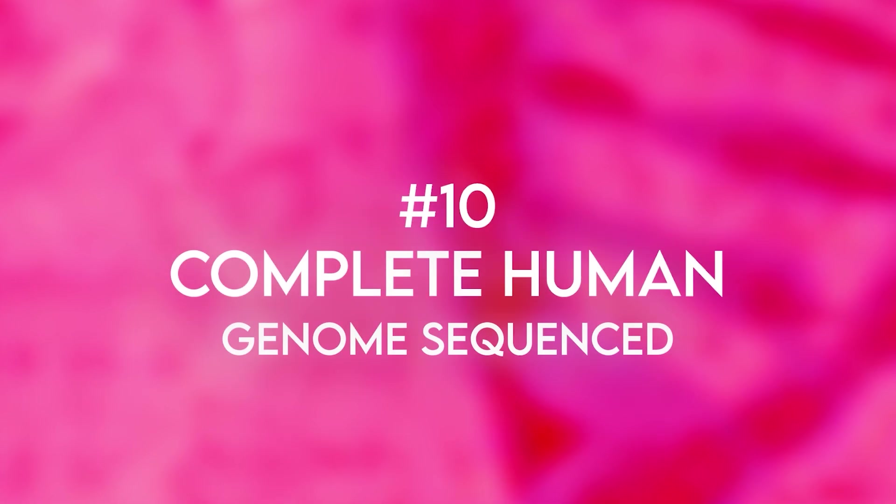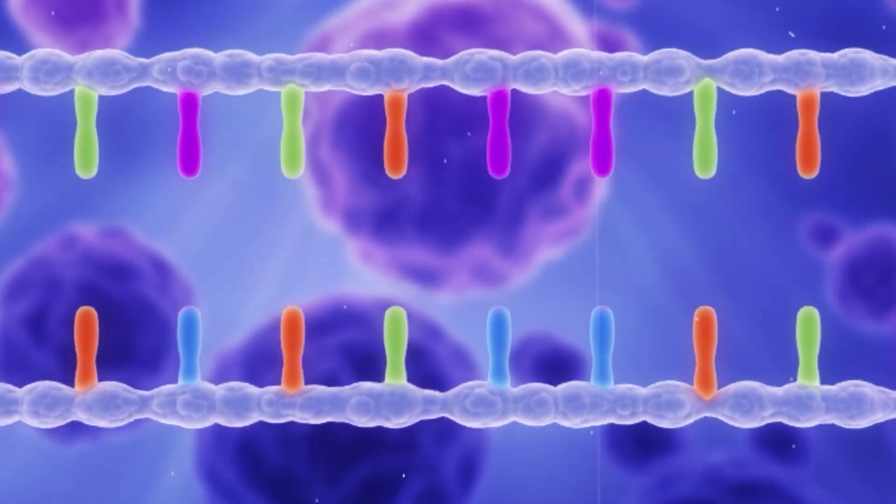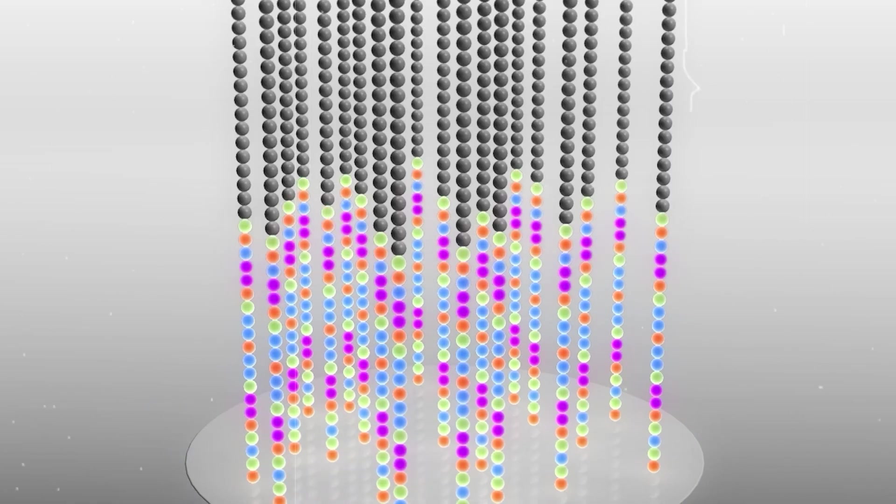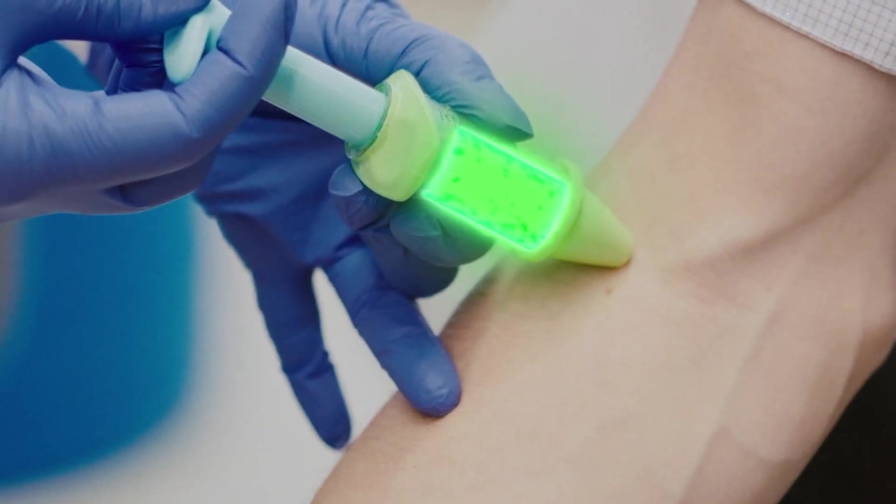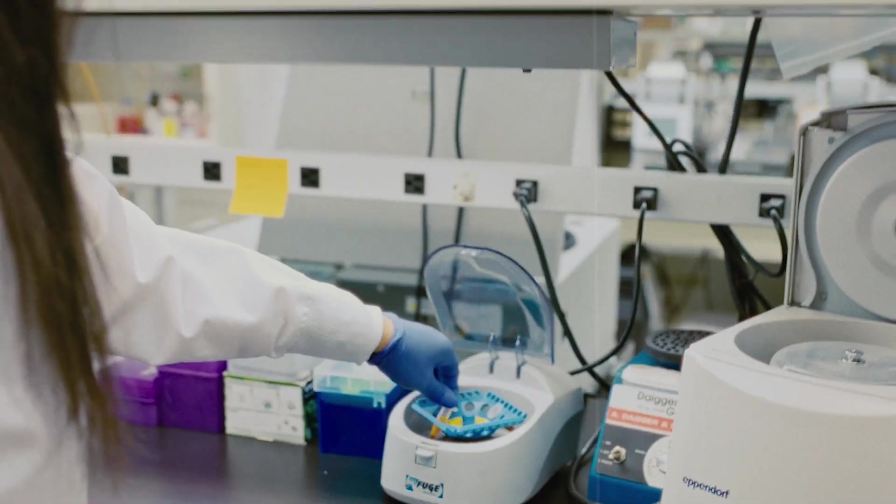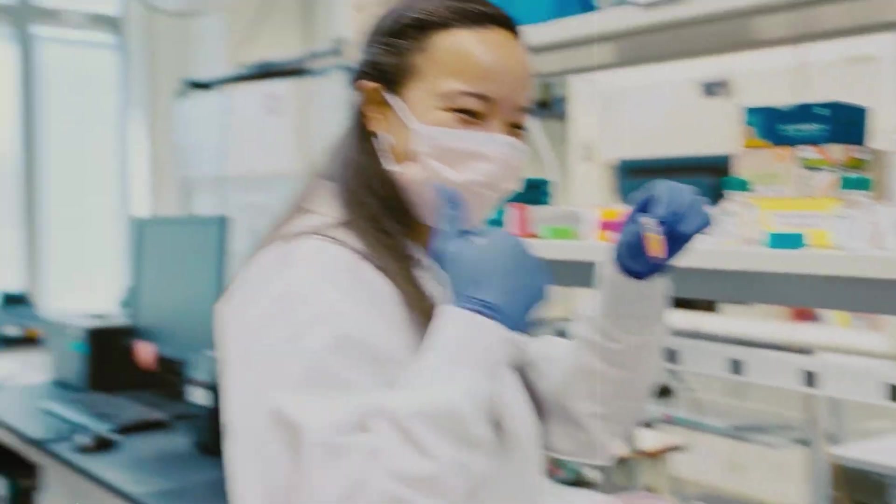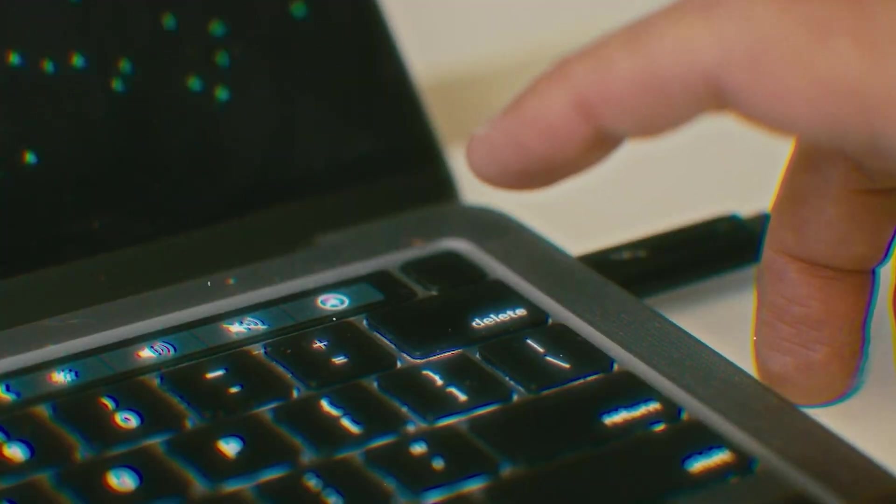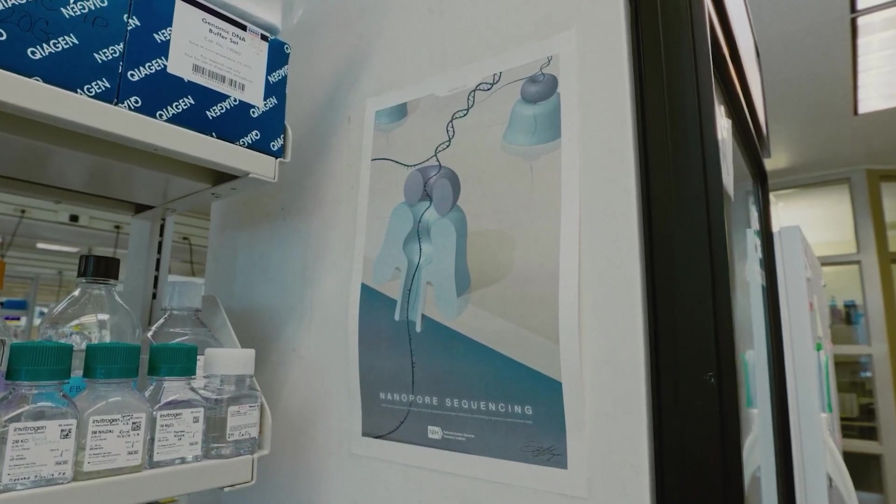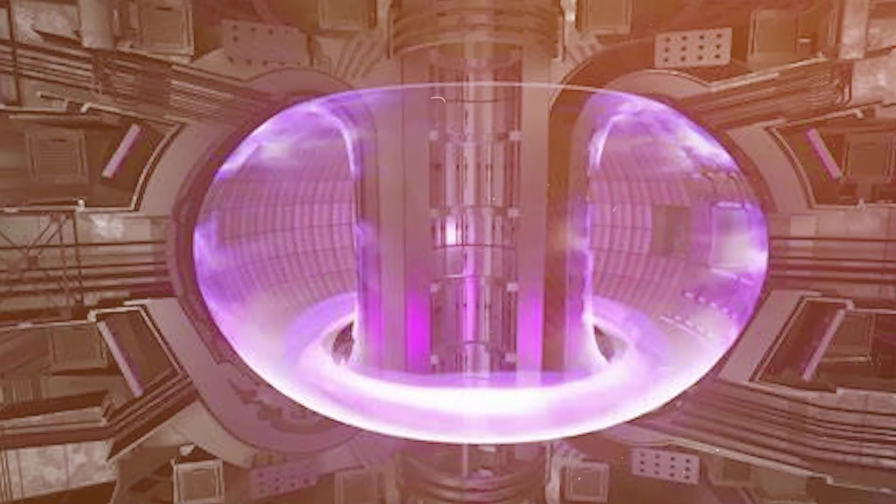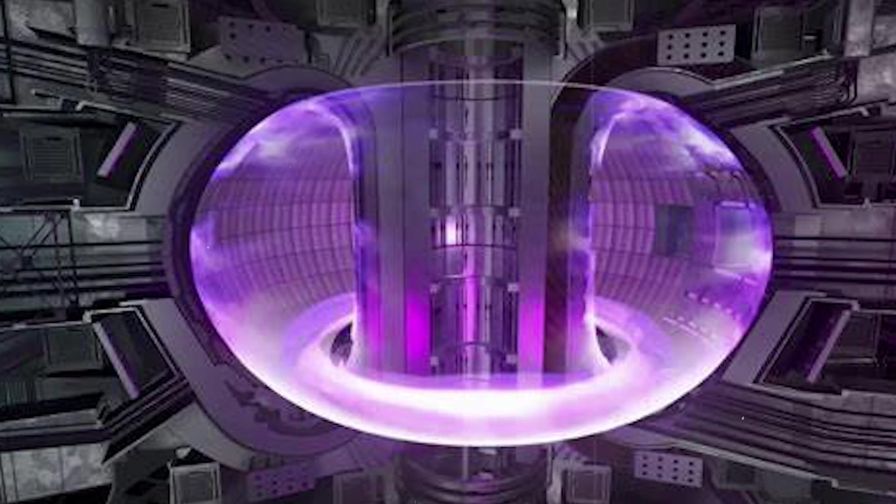Number 10. Complete human genome sequenced. Finally, the human genome is complete. Scientists have finally solved the genetic mystery by deciphering the cryptic remaining 8% of human DNA after decades of effort. With its deeper insights into genetic abnormalities, illness risks and even human evolution, this complete map of the human genome has the potential to transform medicine. What powers us? The answer may lie in the starlike heat of nuclear fusion.